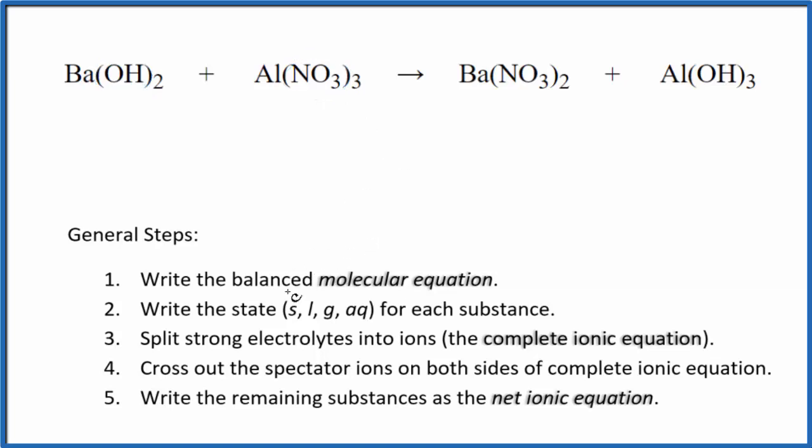So the first thing we need to do is write the balanced molecular equation. When I look at this, I have this odd number here. For instance, two hydroxides here and three over here, so that makes it a little difficult. I think I'll put a two in front of the aluminum hydroxide to make this an even number. So then if I put a two over here,